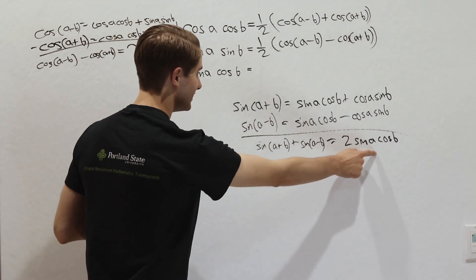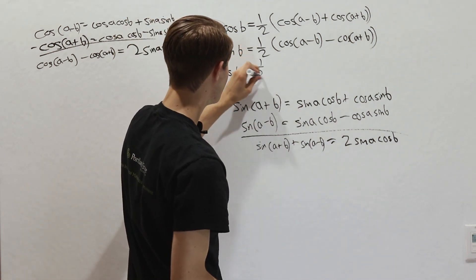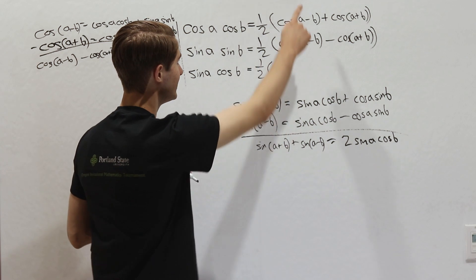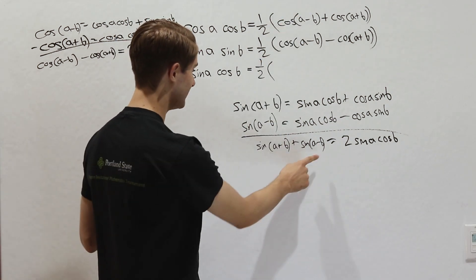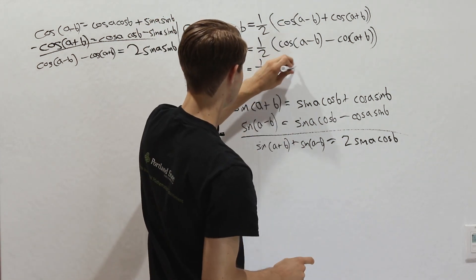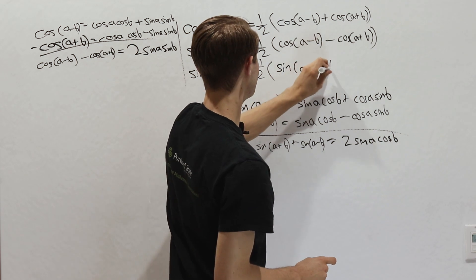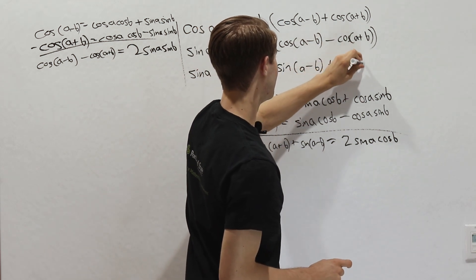Now if we want to isolate sine a cosine b, we'll again take a half. And for the sake of making all these equations look the same, I'll write sine a minus b first, and then plus sine a plus b.